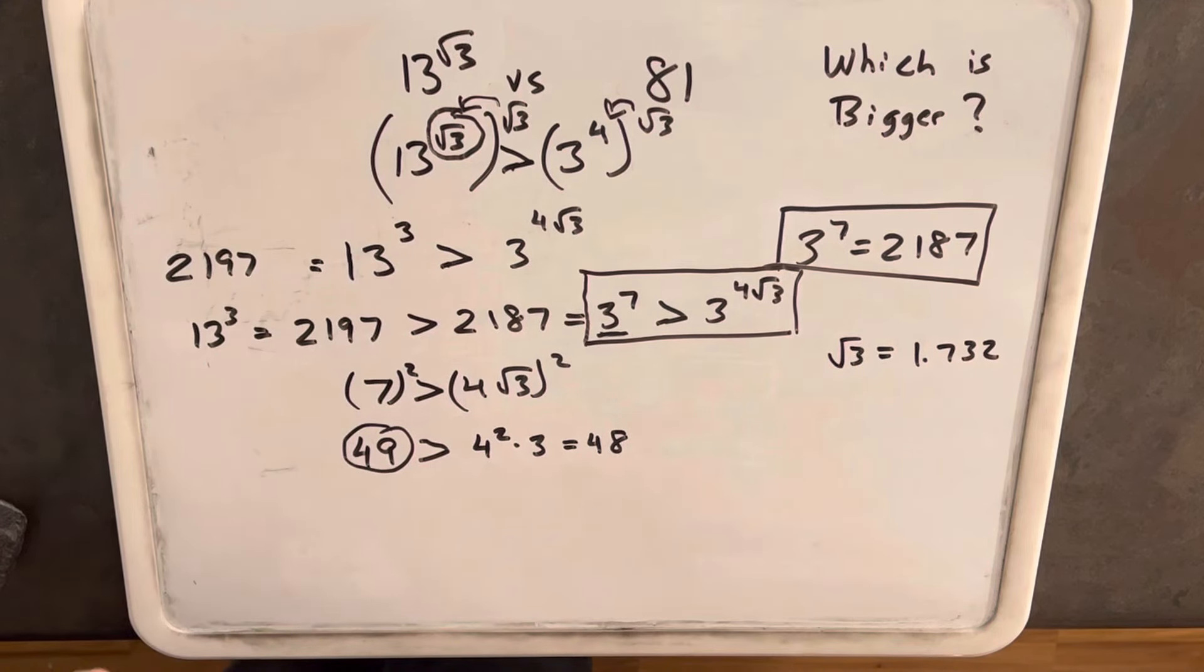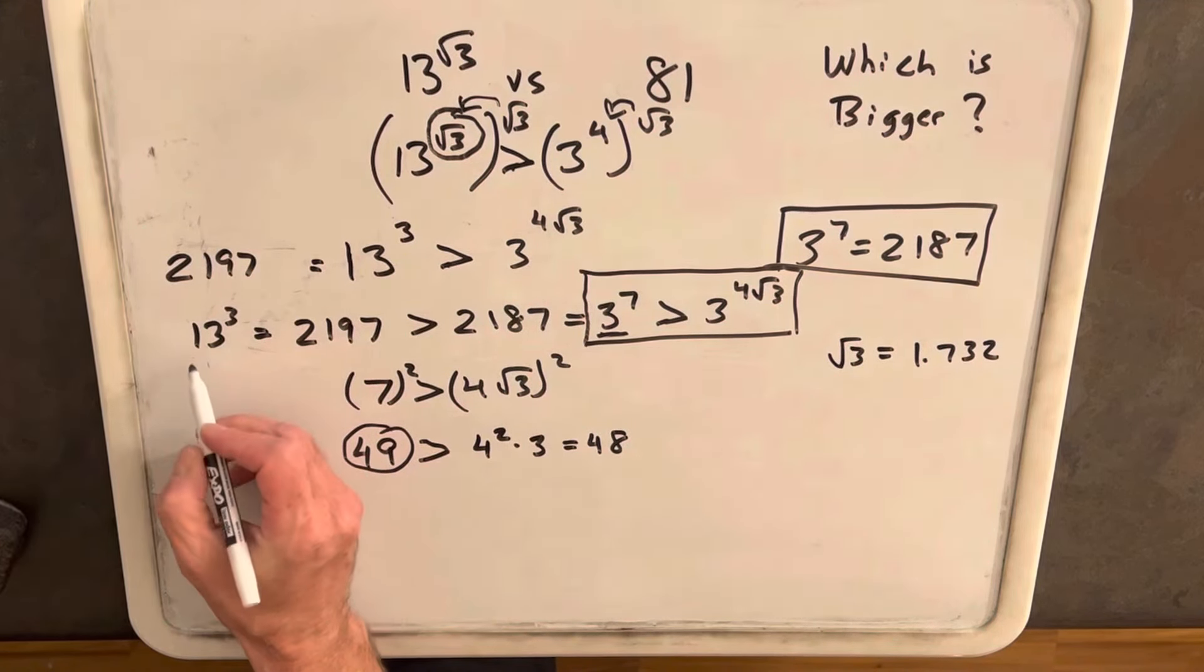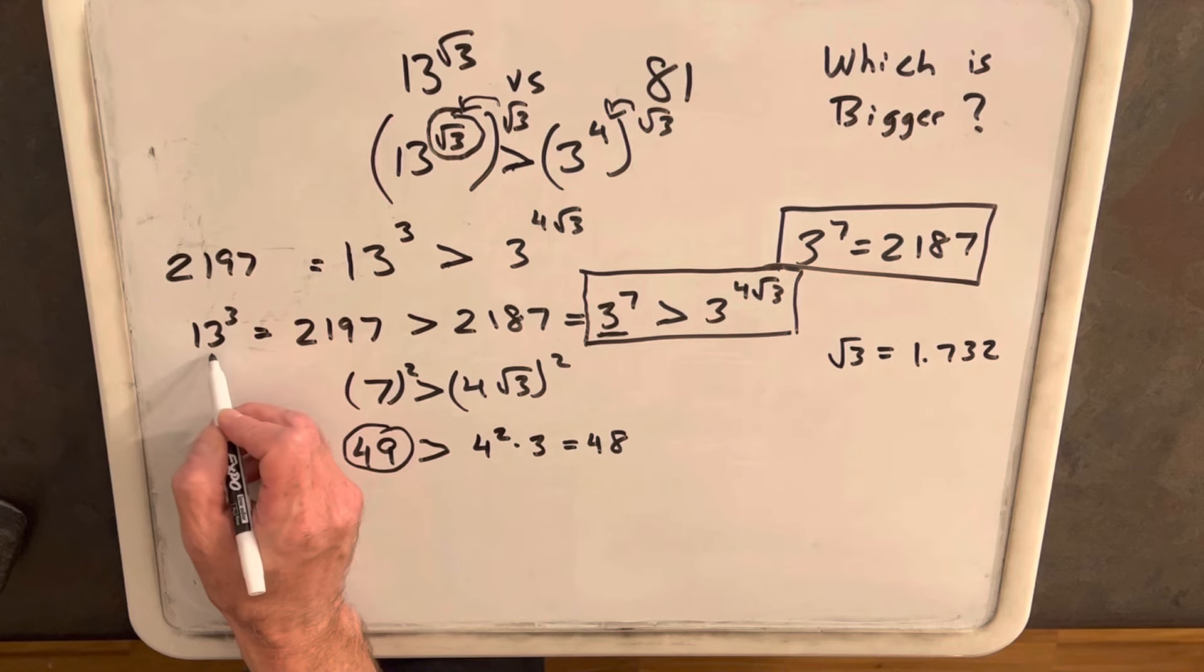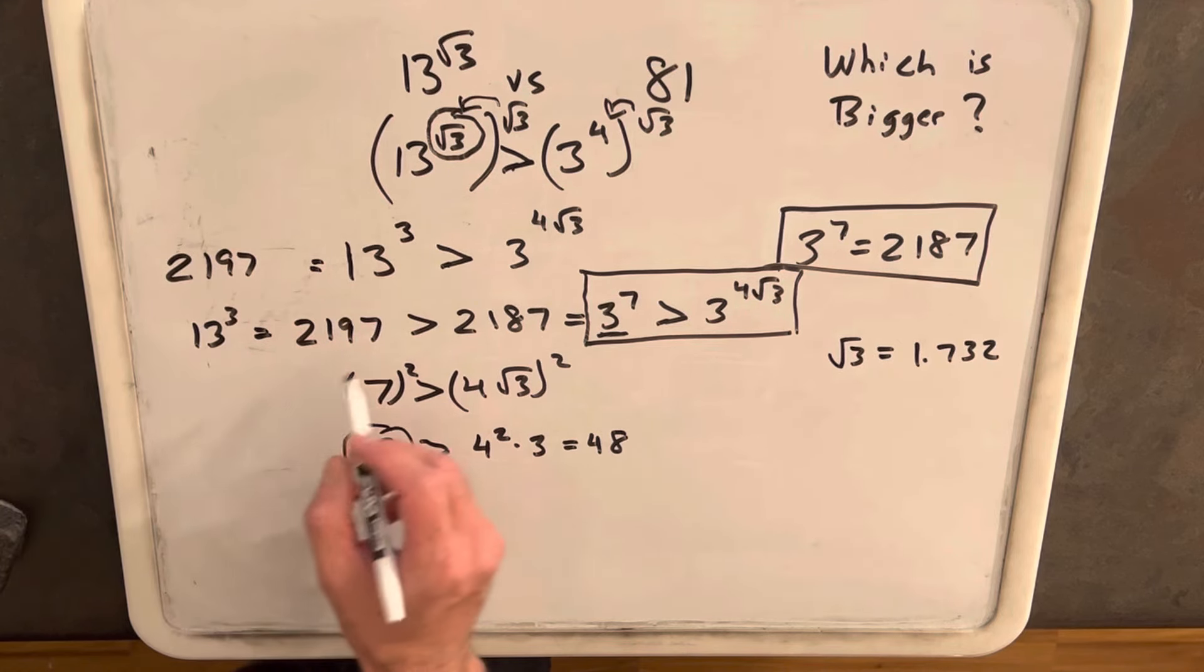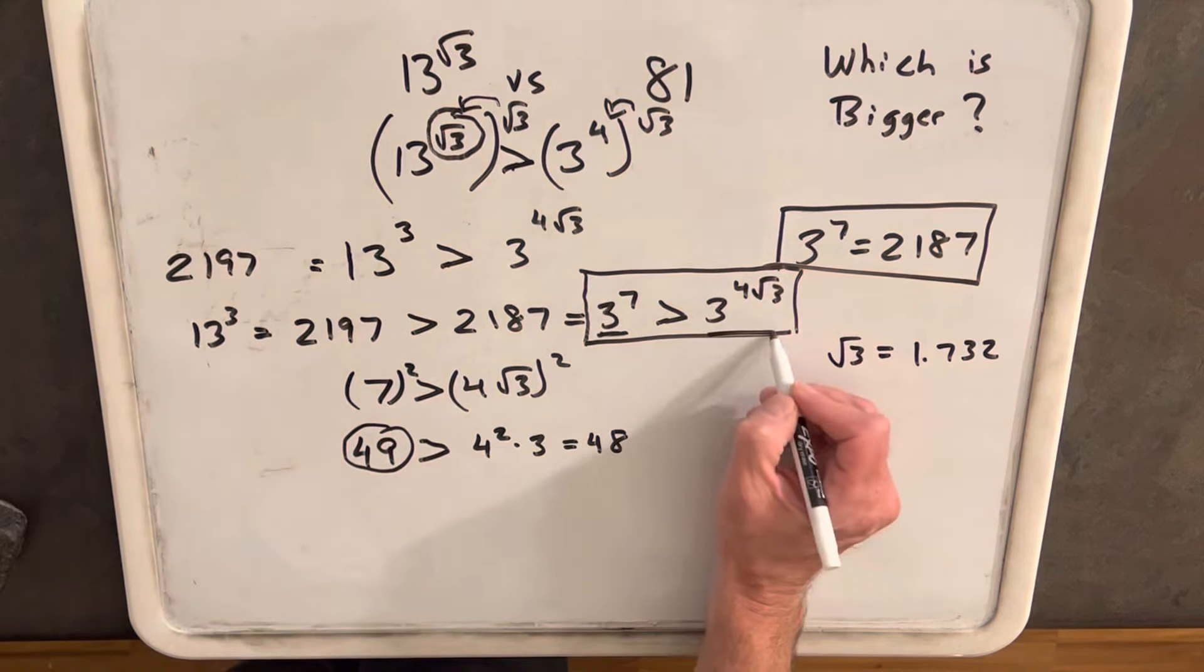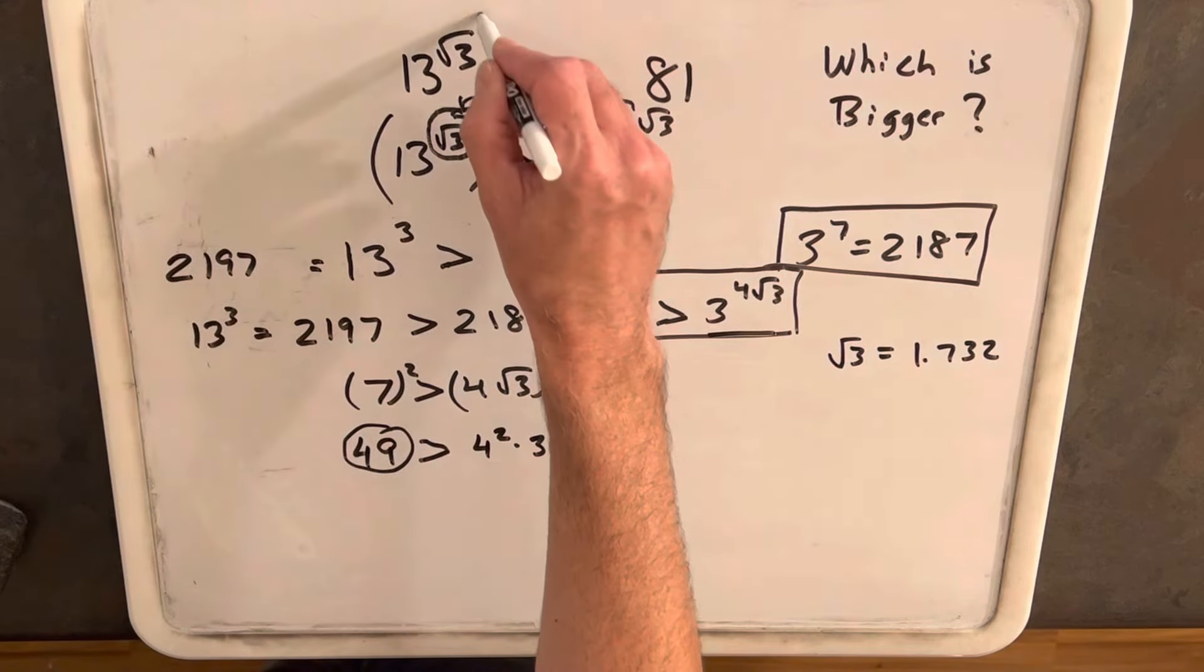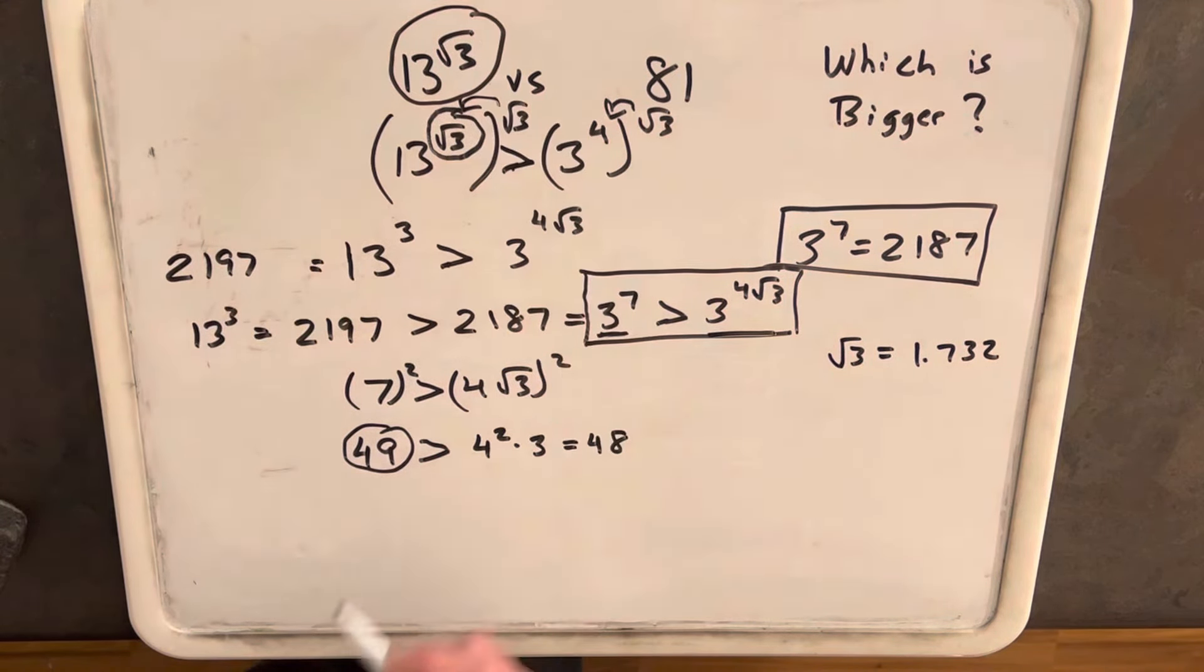Therefore, this whole line works that our 13 cubed value is greater than 3 to the 4 square roots of 3. And then therefore, this value is greater than 81.